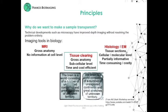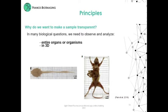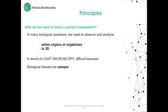Classical histology does not properly represent tissue complexity and heterogeneity. Clearing methods combined with immunolabeling allow inspecting the entire tissue sample. With tissue clearing, we can combine gross anatomy and have access at the same time to subcellular level information, and these techniques are time and cost-efficient. In many biological questions, we need to observe and analyze entire organs and organisms in full, but biological tissues are opaque.